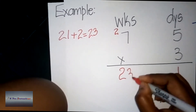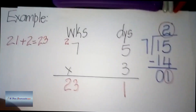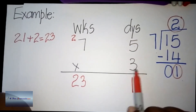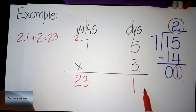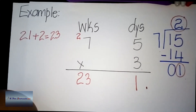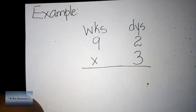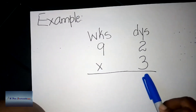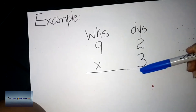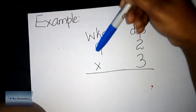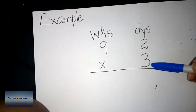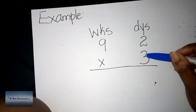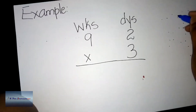So when I multiply seven weeks and five days by three, I get 23 weeks and one day. Now let's look at our next example: nine weeks and two days multiplied by three. Remember, we multiply the bottom number with the days first, then with the weeks. Three multiplied by two gives us six.